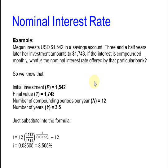This is an example. Let's say that Megan invests $1542 in a savings account. Three and a half years later, her investment amounts to $1743. If the interest is compounded monthly, what is the nominal interest rate offered by that particular bank?